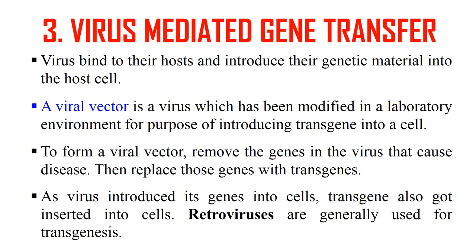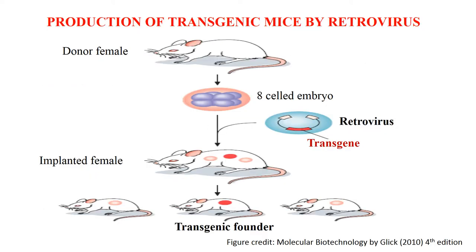To form a viral vector, we first remove the genes responsible for the disease and replace them with the gene of interest — the transgene. Generally, we use retroviruses for this transgenesis process. We take an 8-celled embryo from a donor female, and the retroviral vector containing the transgene is used to transform this embryo. This embryo is then implanted into the uterus of a surrogate mother, which gives birth to transgenic mice, and we then check whether the offspring are transgenic.